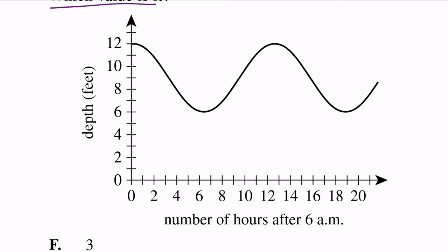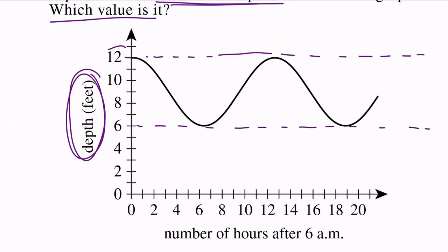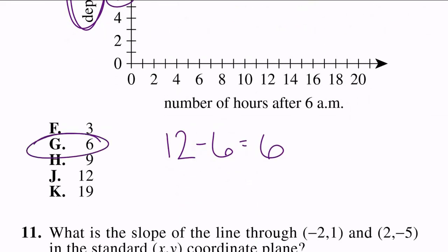So we can look at our graph here and we know our greatest depth. We see depth is measured here on the y axis. We see our greatest depth is up here at 12, and our least depth is down here at 6. So what they're really telling us is what they're telling us to do is figure out what's the difference between 12 and 6. So we do 12 - 6, which is 6. So the difference between the greatest and the least depth is 6, which is G. So our answer to number 10 is G. Thank you.